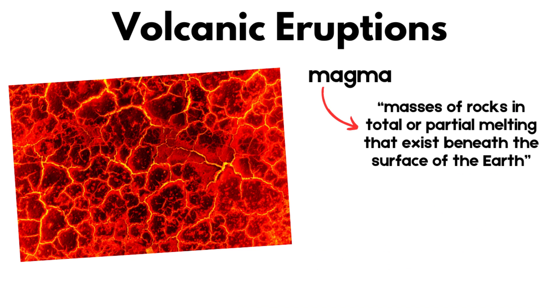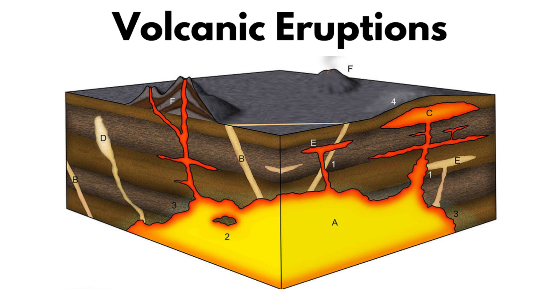Magma is formed from the partial melting of rocks in the Earth's mantle. This magma is less dense than the surrounding rocks and therefore tends to rise toward the surface. As the magma ascends, it creates pressure in magma chambers beneath the Earth's surface.